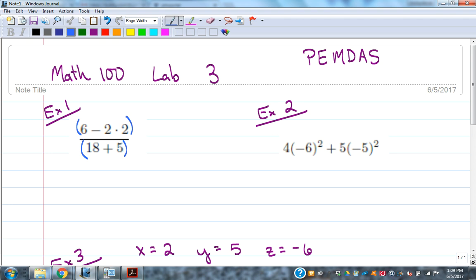Using order of operations, we have 6 minus a multiplication problem, so the multiplication should happen first. That ends up being 6 minus 4 on the top, and we would simplify that - 6 minus 4 would be 2. We could then do the addition on the bottom, 18 plus 5 would be 23. That fraction does not reduce.